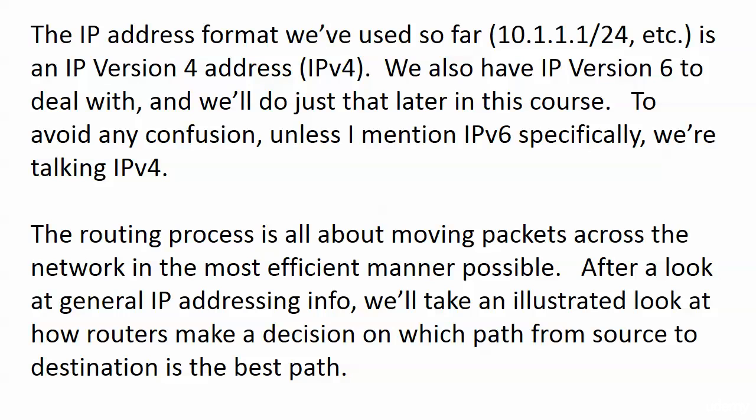The address format we've used so far — when you've seen an address like 10.1.1.1/24 or something like that — that's an IP version 4 address. There's also IP version 6 out there, and that is not just two octets tacked on to the end of a version 4 address, believe me. We will deal with IP version 6 later in the course. But to avoid any confusion, unless IP version 6 is specifically mentioned, we're talking about IP version 4. I'm not going to continually say IP version 4 for the next 10 sections until we get to version 6.